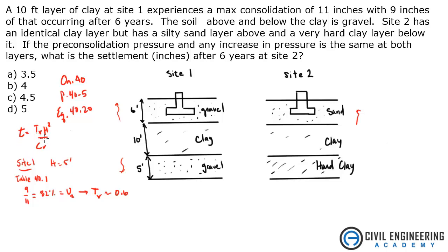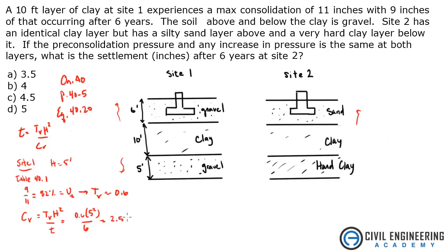Let's go to the equation. If we manipulate equation 40.20 and solve for cv — because we don't know that — everything else we know for Site 1: we know t = 6 years, tv we just solved for, and we know h. Rearranging: cv = tv × h² / t. That gives us 0.6 × 5² / 6 = 2.5 ft² per year.